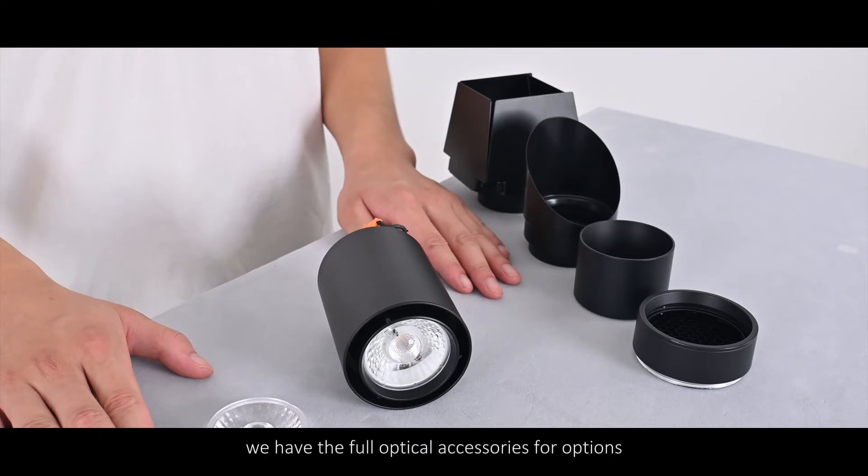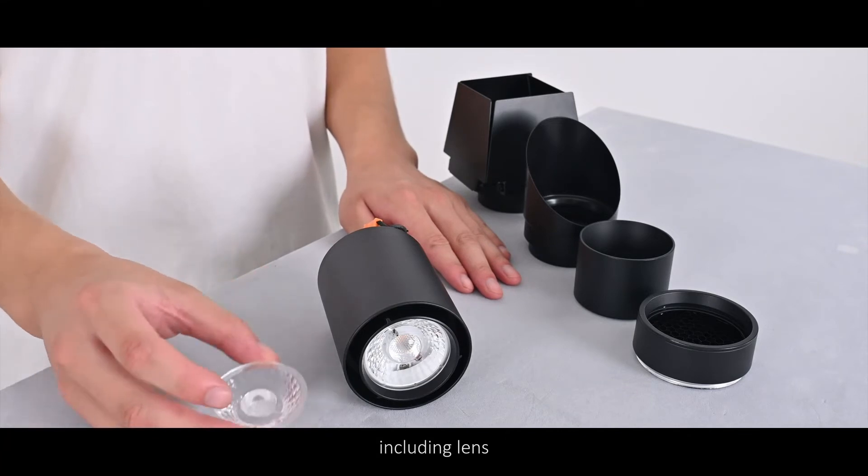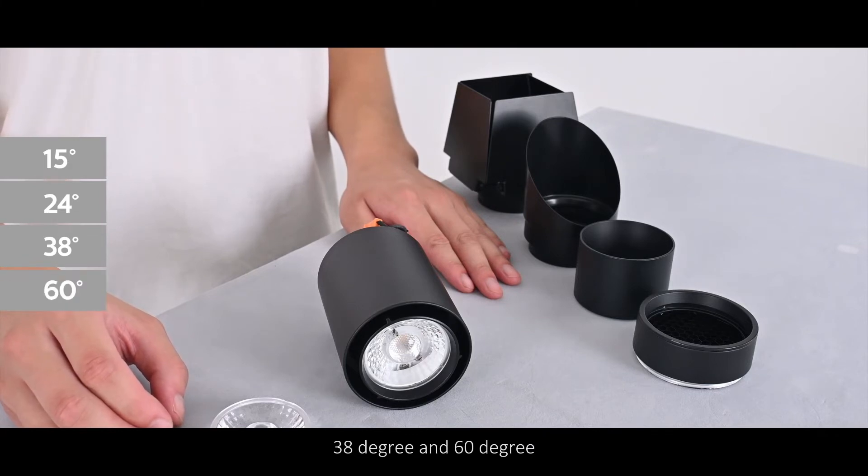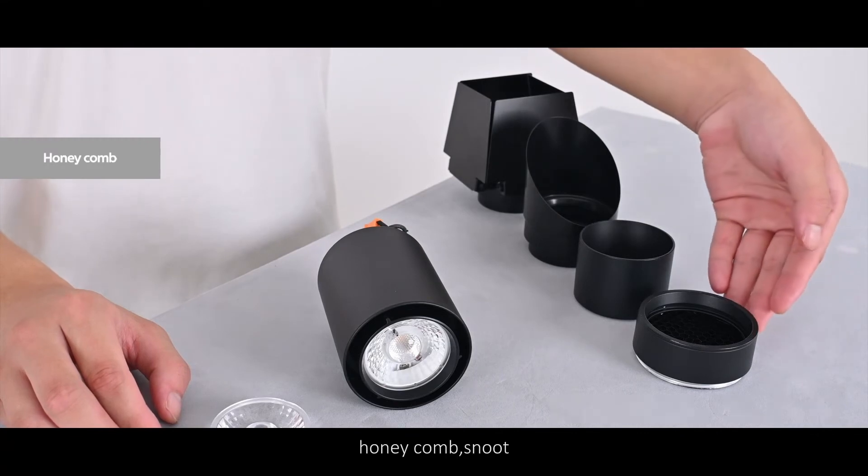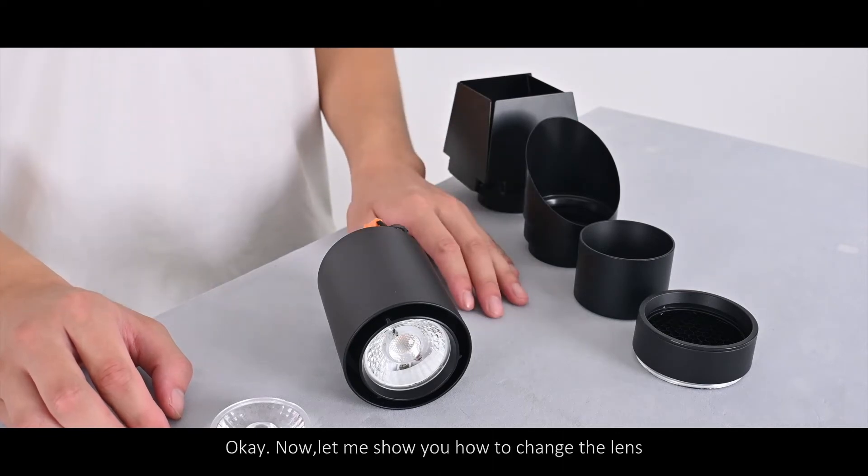For this family, we have the full optical accessories for options. Including lenses, we have 15 degrees, 24 degrees, 38 degrees and 60 degrees. And other accessories: honeycomb, snoot, oval snoot, and barn door. Now let me show you how to change the lens.